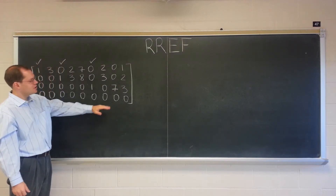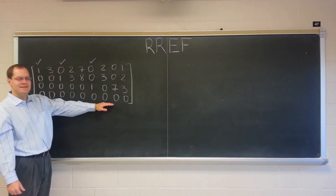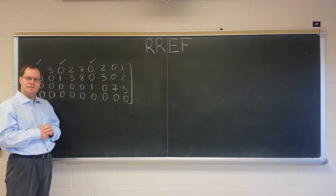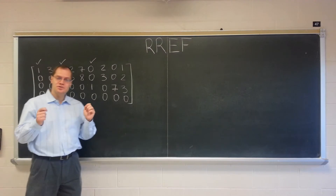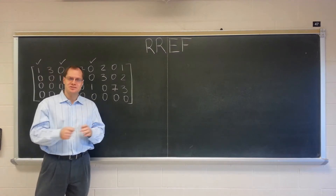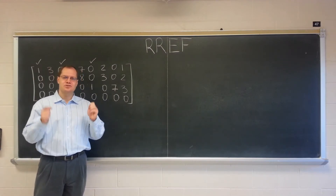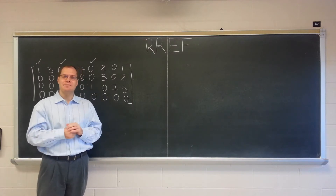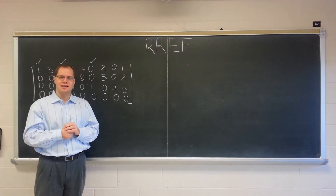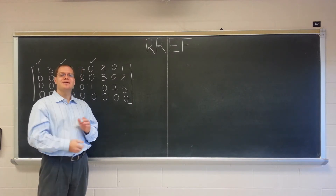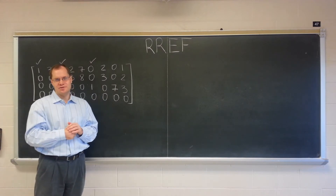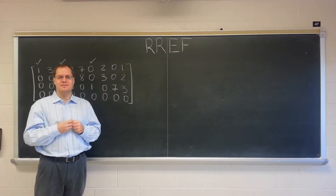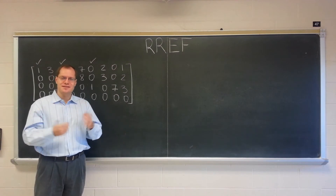And of course, it's these linear relationships that are the key to the null space. When you know the linear relationships among the columns, you know the null space. And when you have a matrix in row-reduced echelon form, you can see the relationship among the columns very easily. That's the point of the row-reduced echelon form — to expose the linear relationships among the columns in a very obvious and clear way.